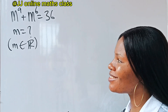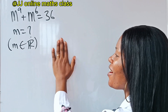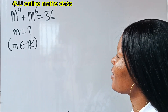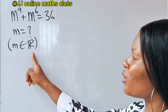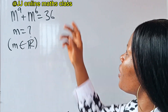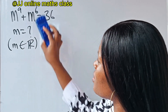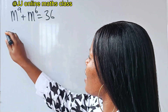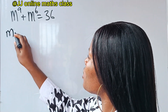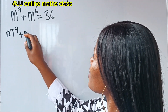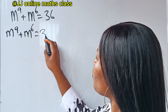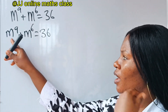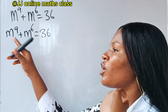This is a very interesting question — let's do it together. We are asked to solve for m, where m is real. We have m to the power of 9 plus m to the power of 6 is equal to 36.